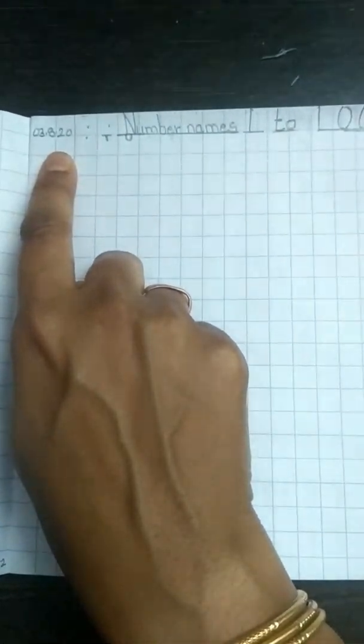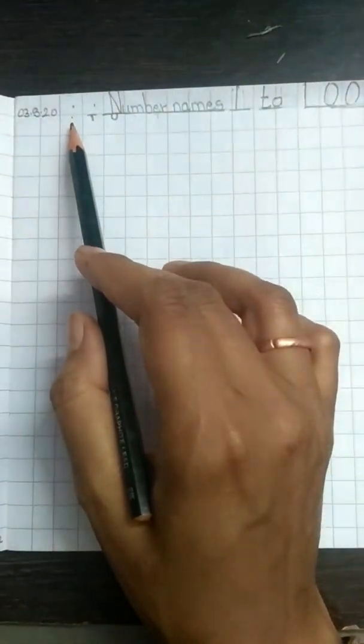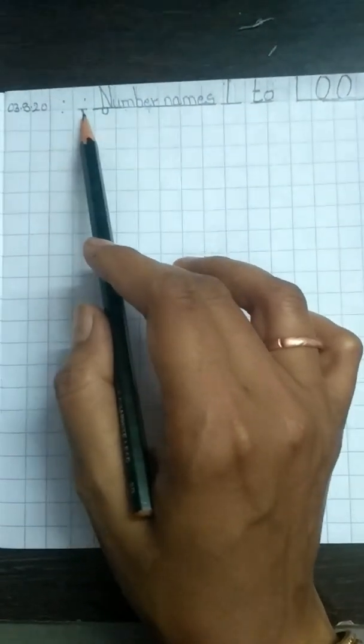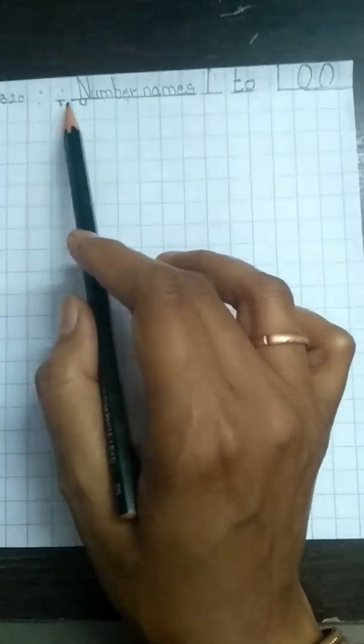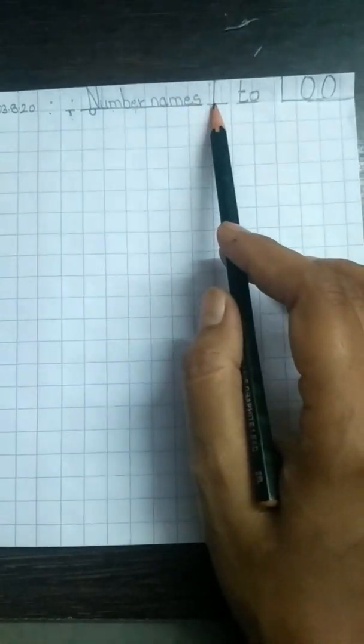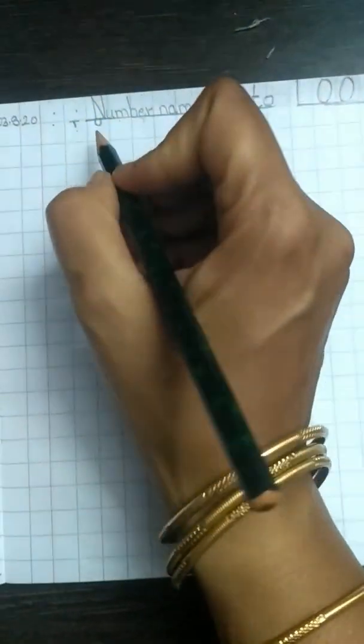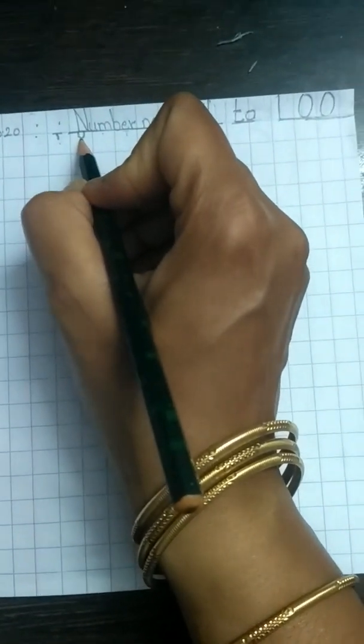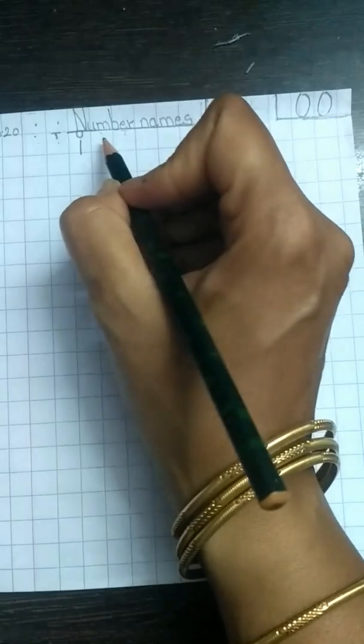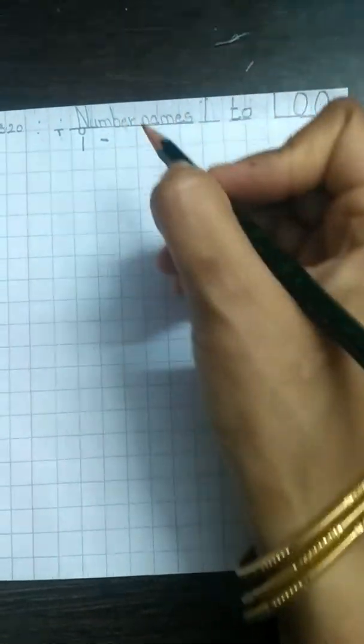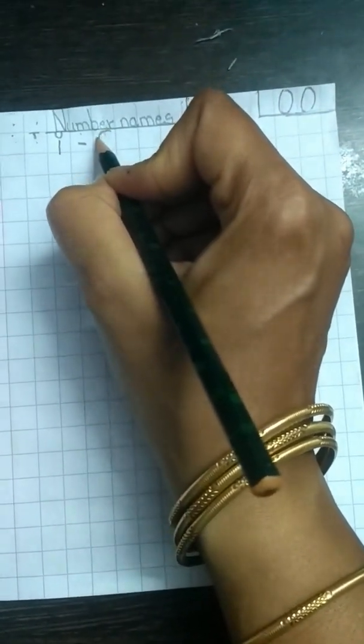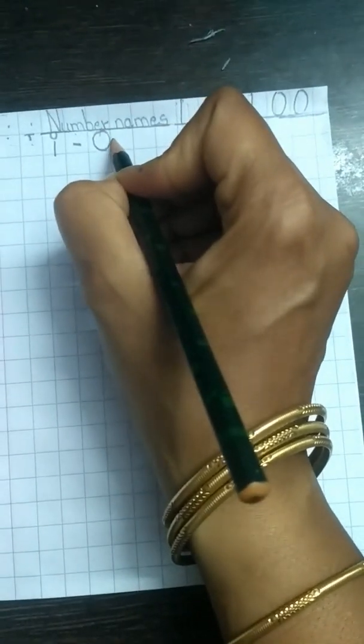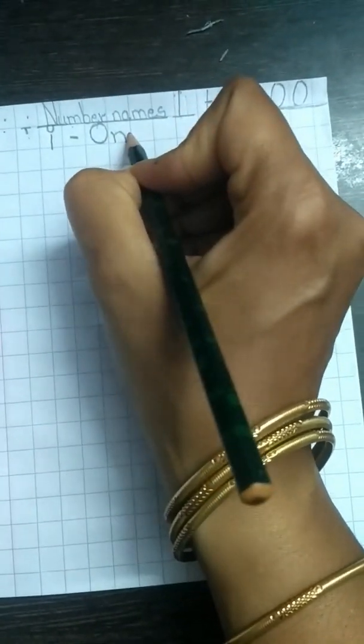Now we start from the next line. In the next line, you have seen I have left first box. And then as usual, we write T and U. So my first number is number 1, and I will start to write 1 in the units place. So I will write 1. Then I will put a dash in the next box. Then now I am going to write the spelling, that is O, N, E.